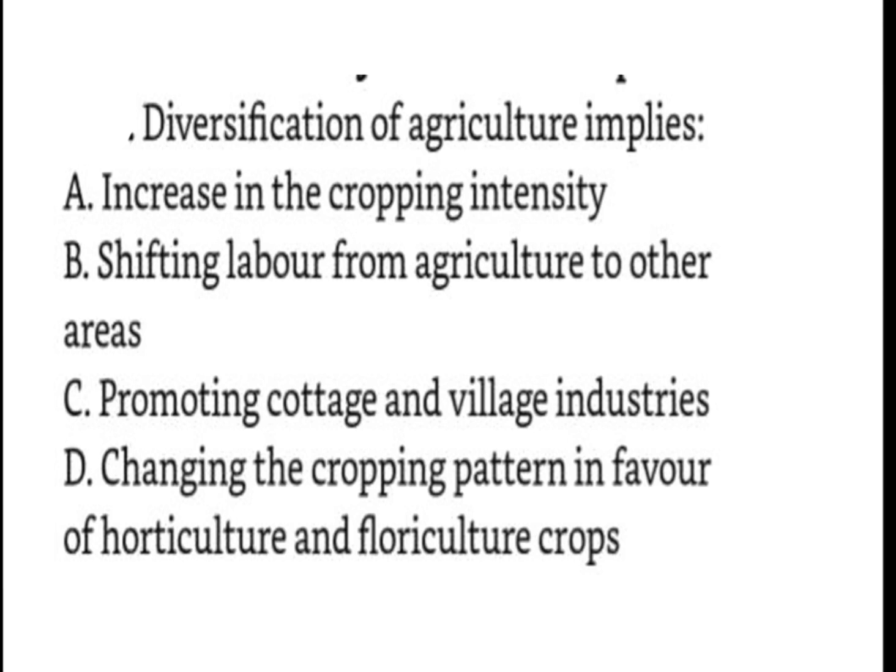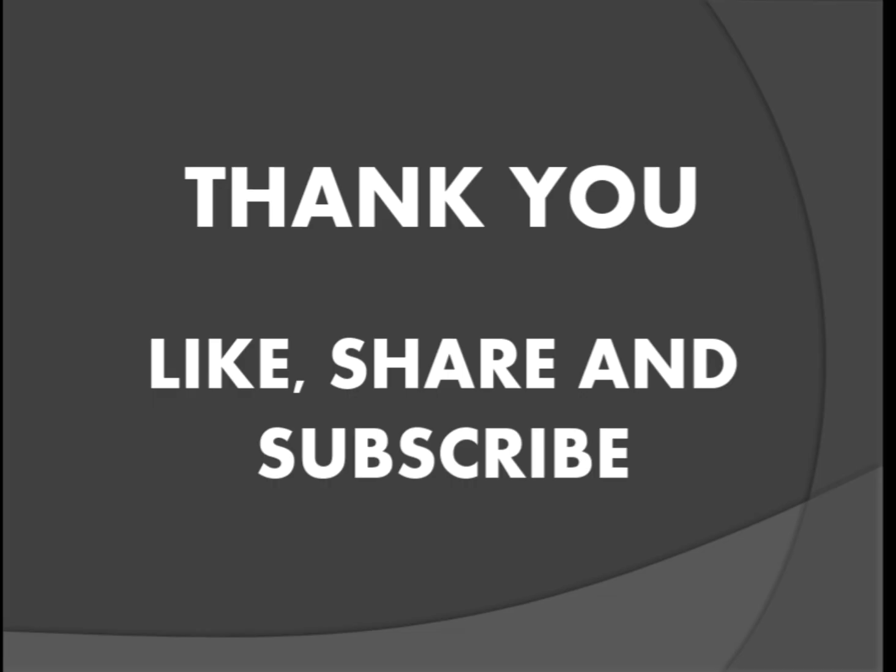Now the last question is: diversification of agriculture implies? The answer will be changing the cropping pattern in favor of horticulture and floriculture crops, because diversification of agriculture means when there is a wider choice in production of variety of crops in a given area so that they can expand production related to their activities. So our answer is D.